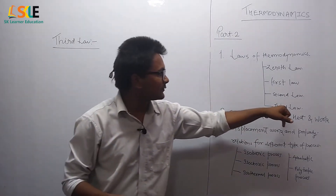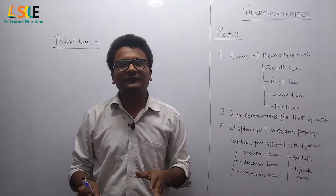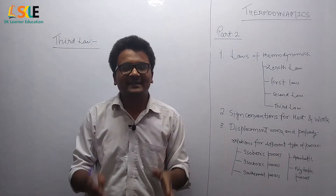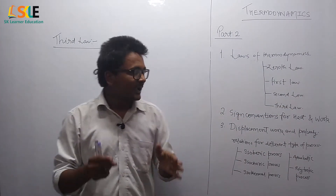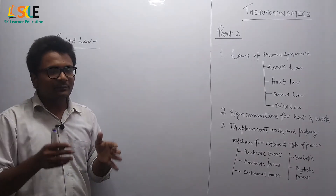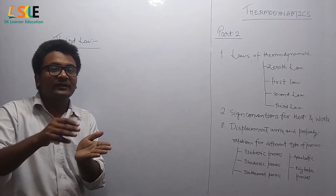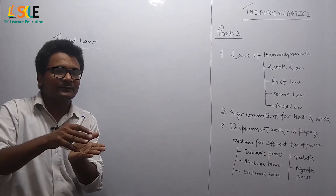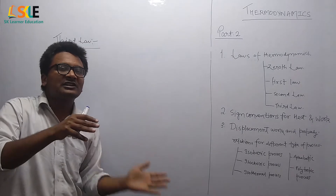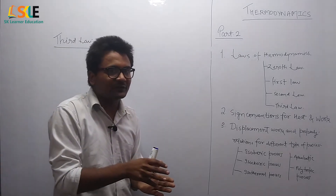Now we will see the third law of thermodynamics. The third law states that it is impossible to reduce the temperature of any system to absolute zero in a finite number of processes.